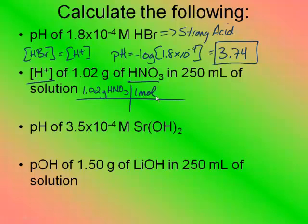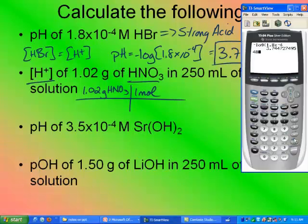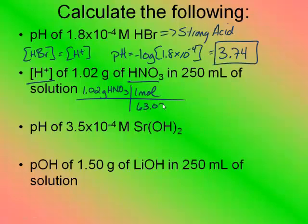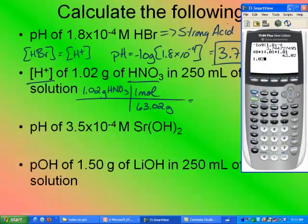One mole on the top, and the weight of HNO3 on the bottom, which would be 48 plus 14.01 plus 1.01 is 63.02. And 1.02 divided by second answer is 0.0162.